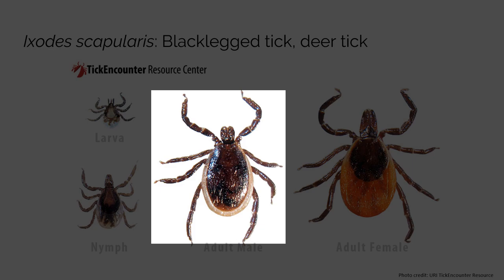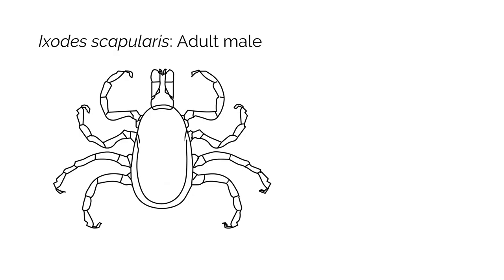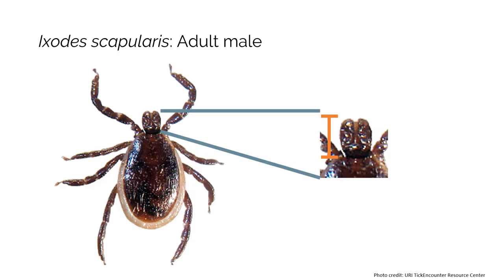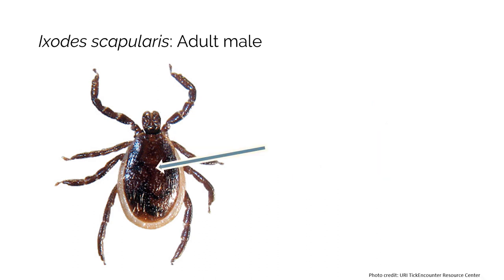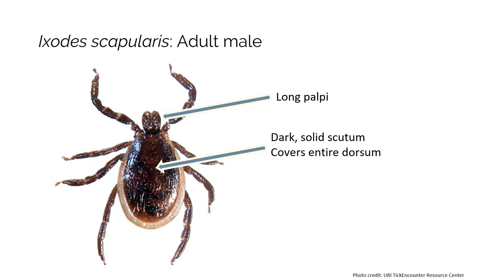Now let's take a look at the adult male black-legged tick. Both the mouthparts and the scutum are important in photo identification. Like the adult female, the adult male black-legged tick has palpi that are longer than the width of the basis capitulum. The scutum is solid and dark, and notice that it takes up the entirety of the dorsum. These two characteristics are key in identifying adult male black-legged ticks from photo submissions.